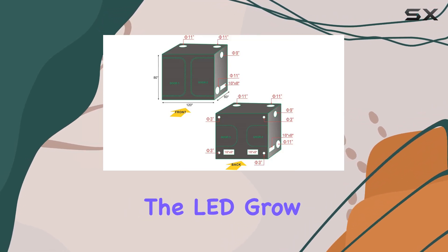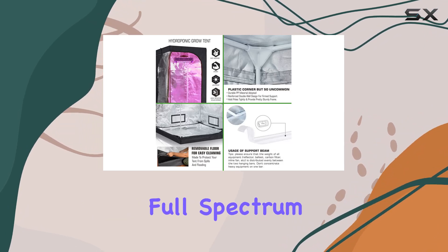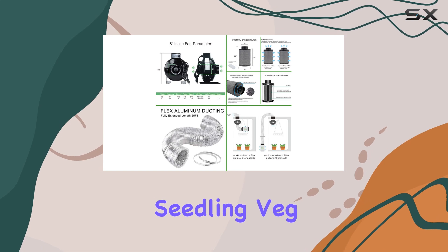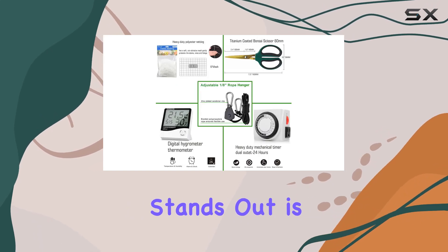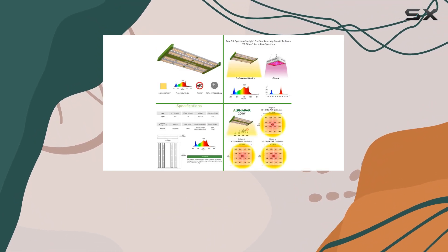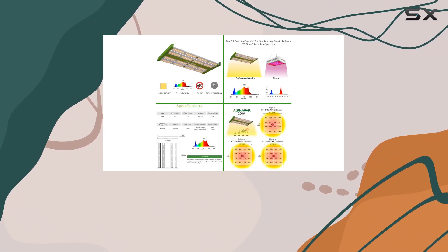Moving on to the LED grow lights, they feature a user-friendly full-spectrum design tailored to all growth stages: germination, seedling, veg, and flower. What stands out is the quiet operation due to the fanless design, making it ideal for creating a serene grow environment without compromising on performance.